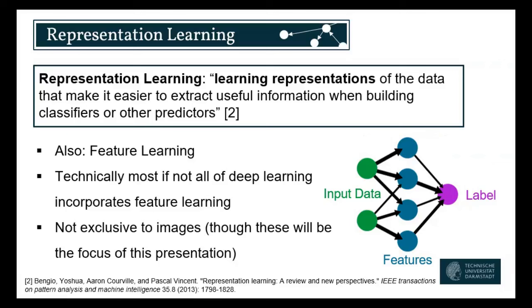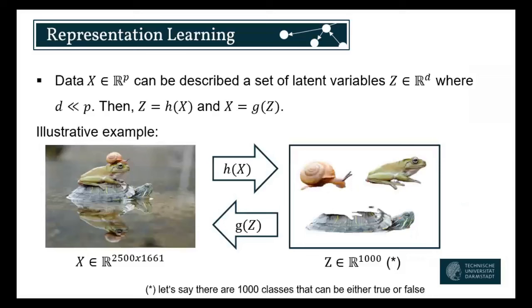So in a way, any neural network with hidden layers does representation learning as in feature learning, to then help with the classification at the end. I also want to add that representation learning does not exclusively have to be about images — we can also talk about text or multimodal representations. However, most recent research is centered around images, and it also makes the most sense for showing it, so that's where I will stick to it today.